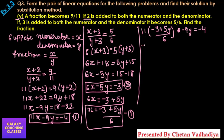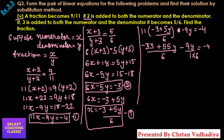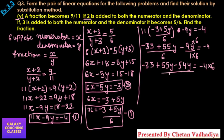Multiplying out: minus 33 plus 55y upon 6 minus 9y equals minus 4. Taking LCM of 6, we get (minus 33 + 55y minus 54y) over 6 equals minus 4. Multiplying both sides by 6: minus 33 + y = minus 24. Taking minus 33 to the other side gives y equals minus 24 plus 33, so y equals 9.